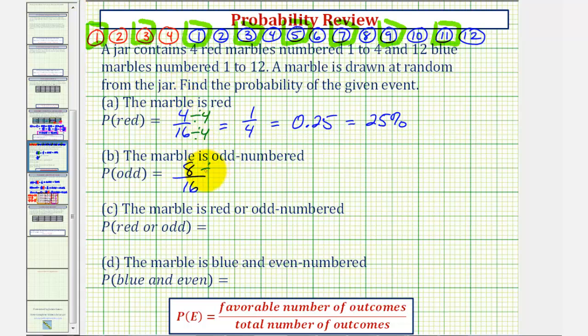Which again simplifies, common factor of eight. This simplifies to 1/2, which as a decimal would be 0.5, or as a percent, 50%.